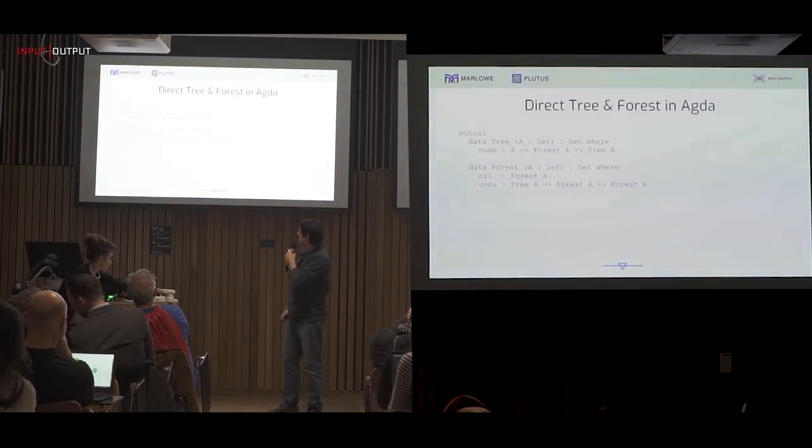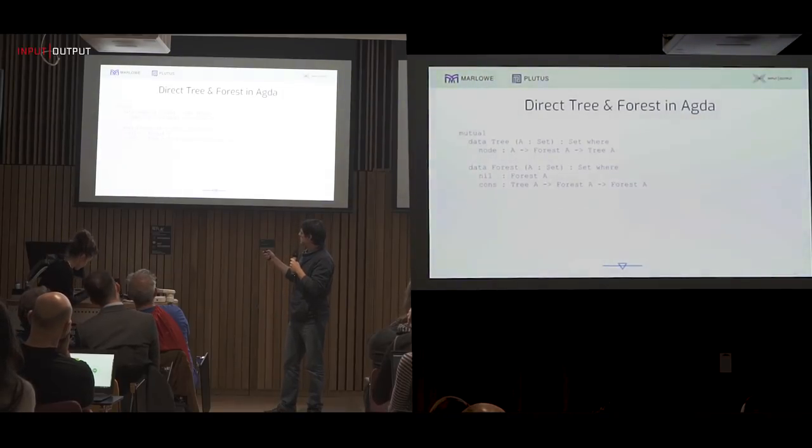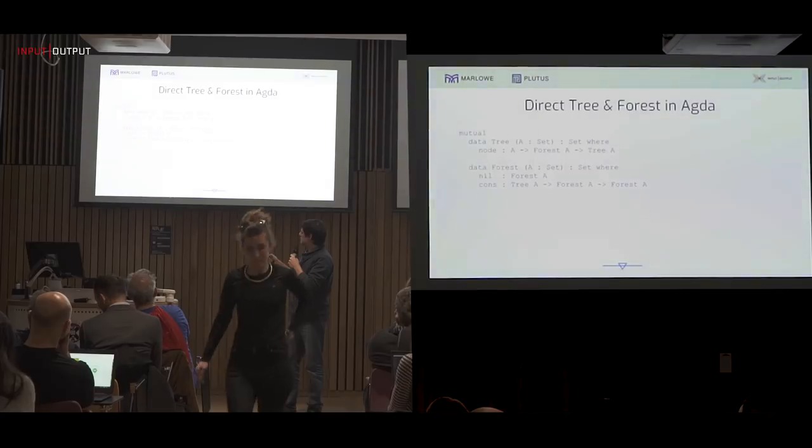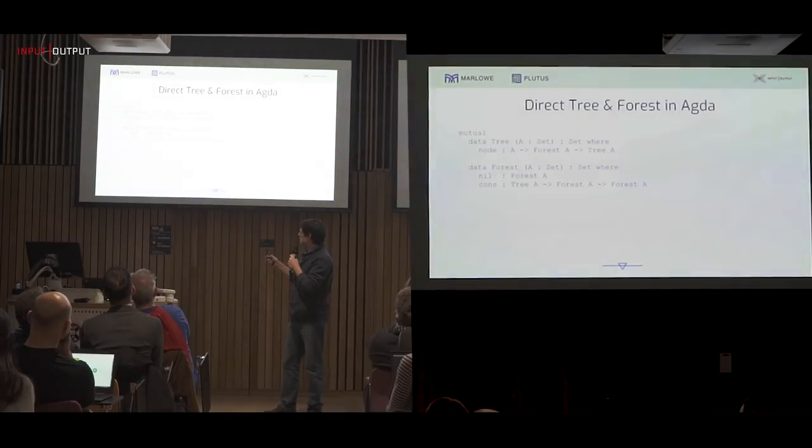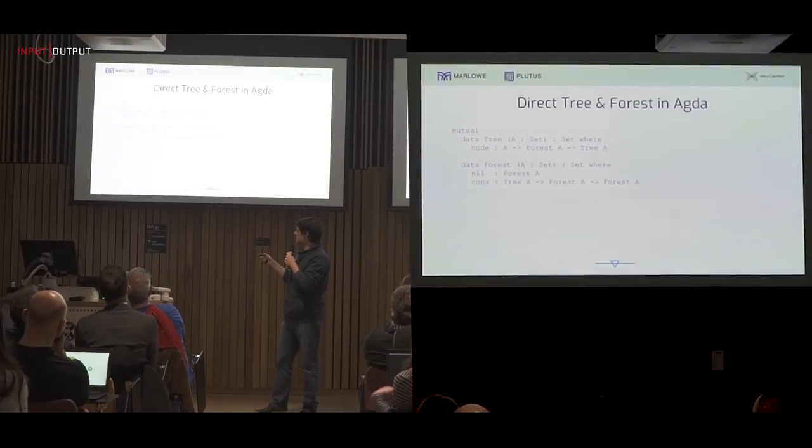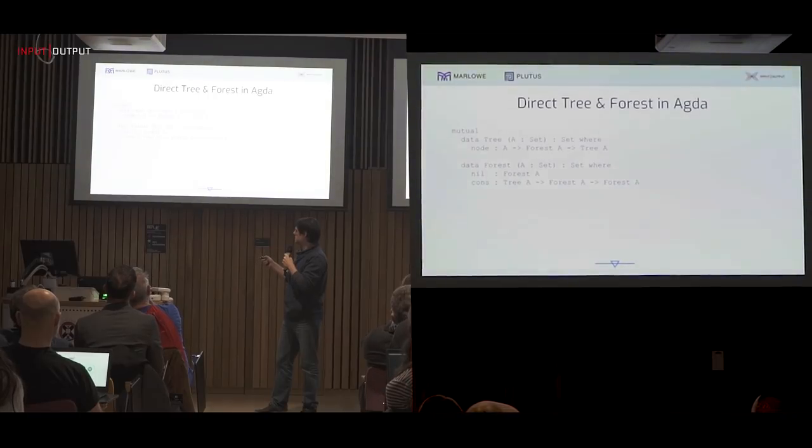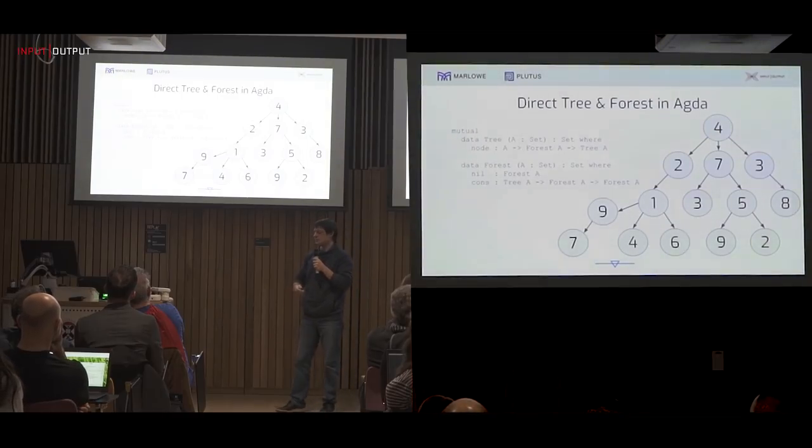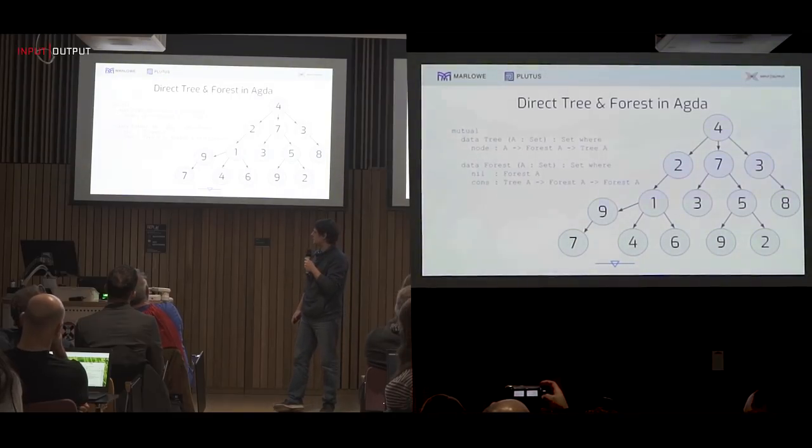We will use this example. It's the tree forest family. A tree has only one constructor, it's node. A node carries an A and a forest A. A forest A is essentially a list of trees. As a list, it has the constructor for the empty list and the constructor that allows to add a tree to a forest. That's an example of a tree. We will use this simple family and improve it in a few steps in order to arrive at the representation that is System F Omega-compatible.